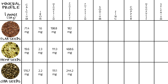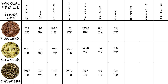For phosphorus: flax seeds 182 mg, hemp seeds 468.6 mg, and chia seeds 244.2 mg. For potassium: flax seeds 230.9 mg, hemp seeds 340.8 mg, chia seeds 115.6 mg. For sodium: flax seeds 8.5 mg, hemp seeds 1.4 mg, chia seeds 4.5 mg. For zinc: flax seeds 1.2 mg, hemp seeds 2.8 mg, chia seeds 1.3 mg. For copper: flax seeds 0.3 mg, hemp seeds 0.5 mg, chia seeds 0.3 mg.